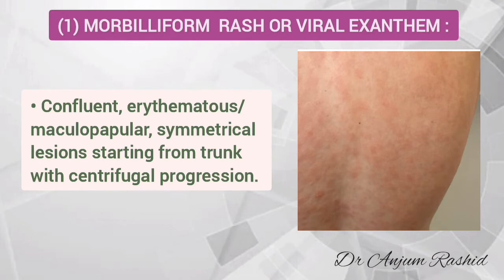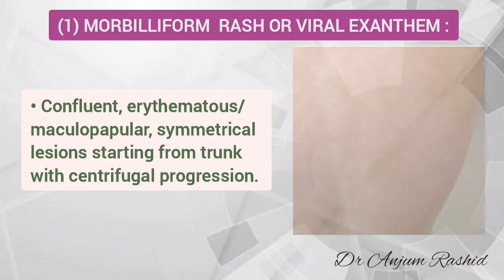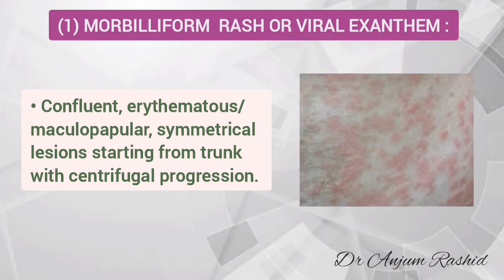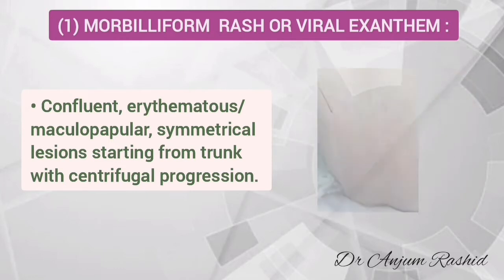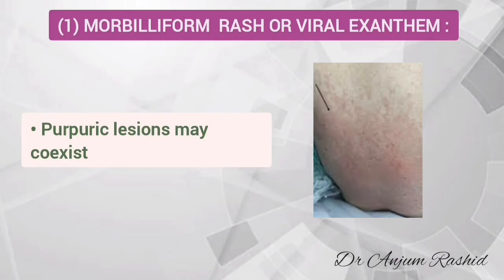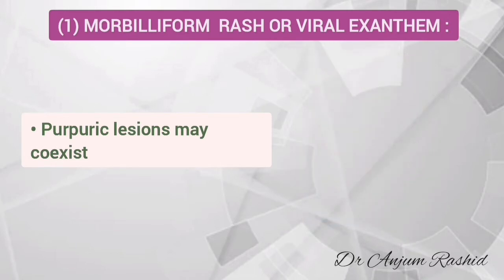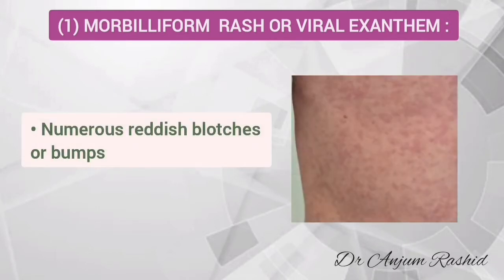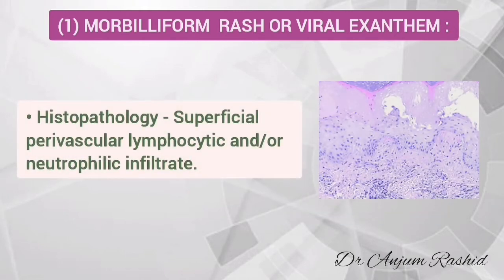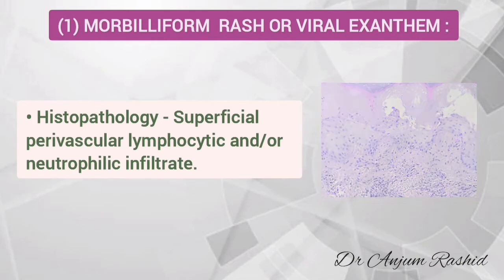The most common rash associated with COVID-19 is morbidiform rash or viral exanthem. It is a confluent erythematous maculopapular rash. It is symmetrical and the lesions start from the trunk followed by centrifugal progression. Purpuric lesions may coexist from the onset or develop during the course of the skin eruption. This rash appears as numerous reddish blotches or bumps over the body.